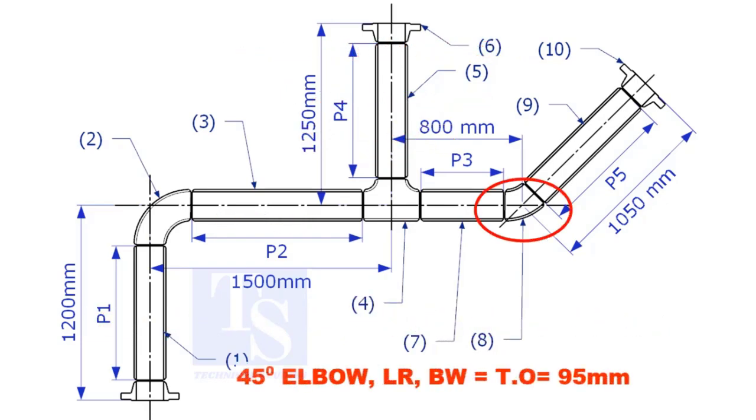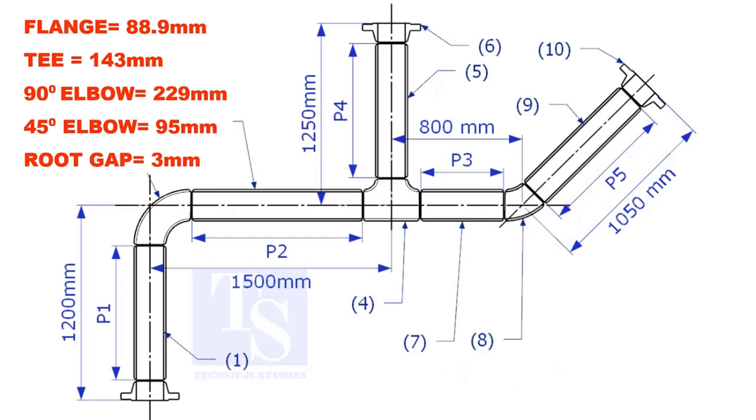Takeoff length of the 45 degree elbow is 95mm. The true lengths of pipes P3, P4, and P5 are given.